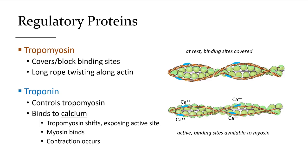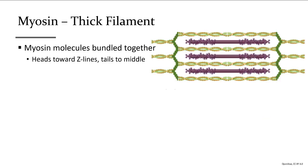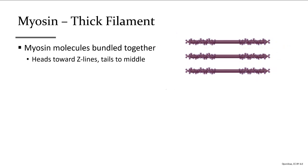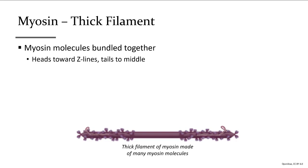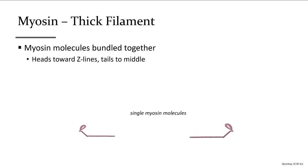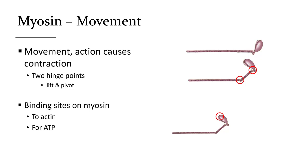Myosin is made of many individual molecules bundled together, each with a long thin head. The molecules are arranged with their tails pointing toward the middle and the heads out to attach and pull on actin. It is these heads pulling on actin that brings the Z-lines together. Myosin is the molecule that makes the force happen.